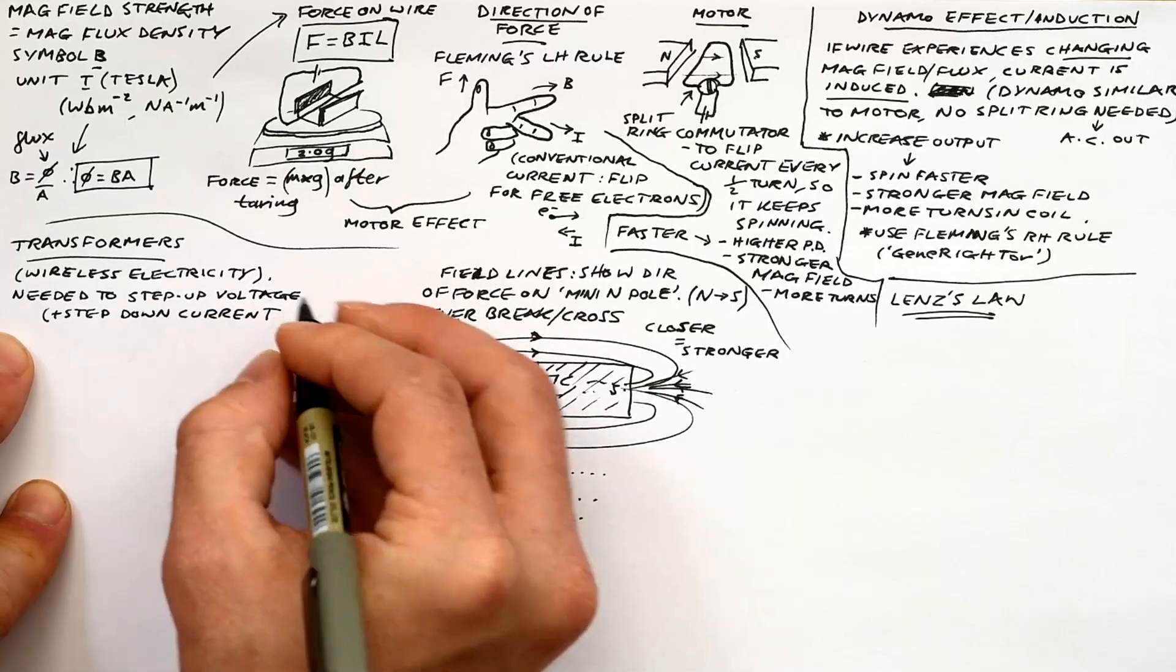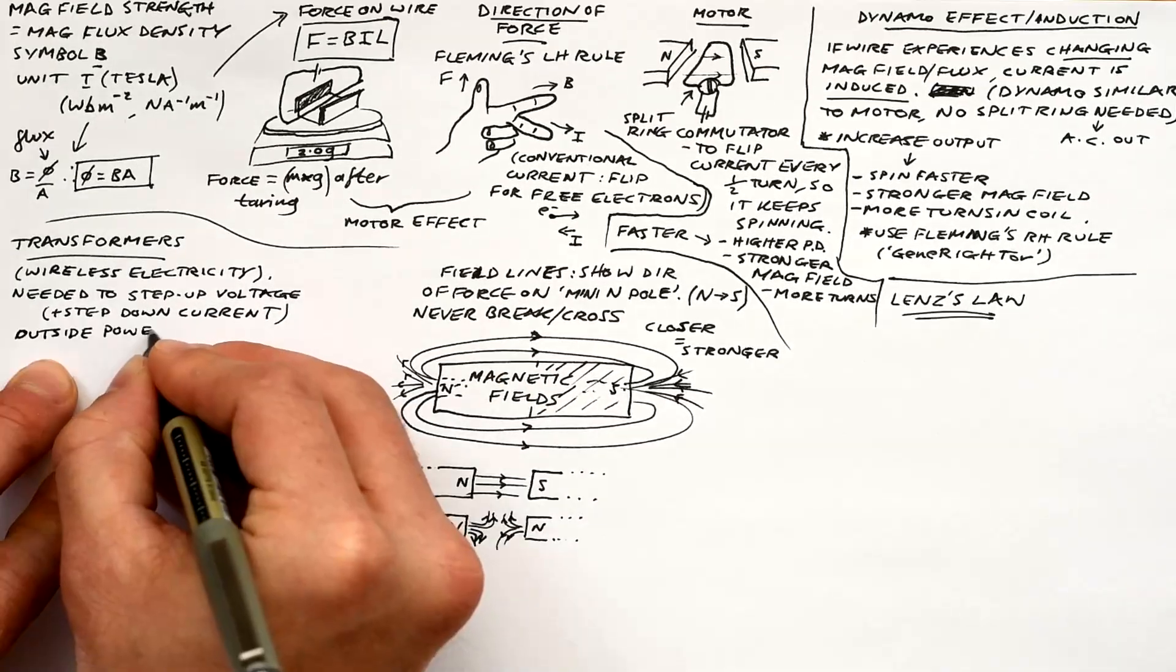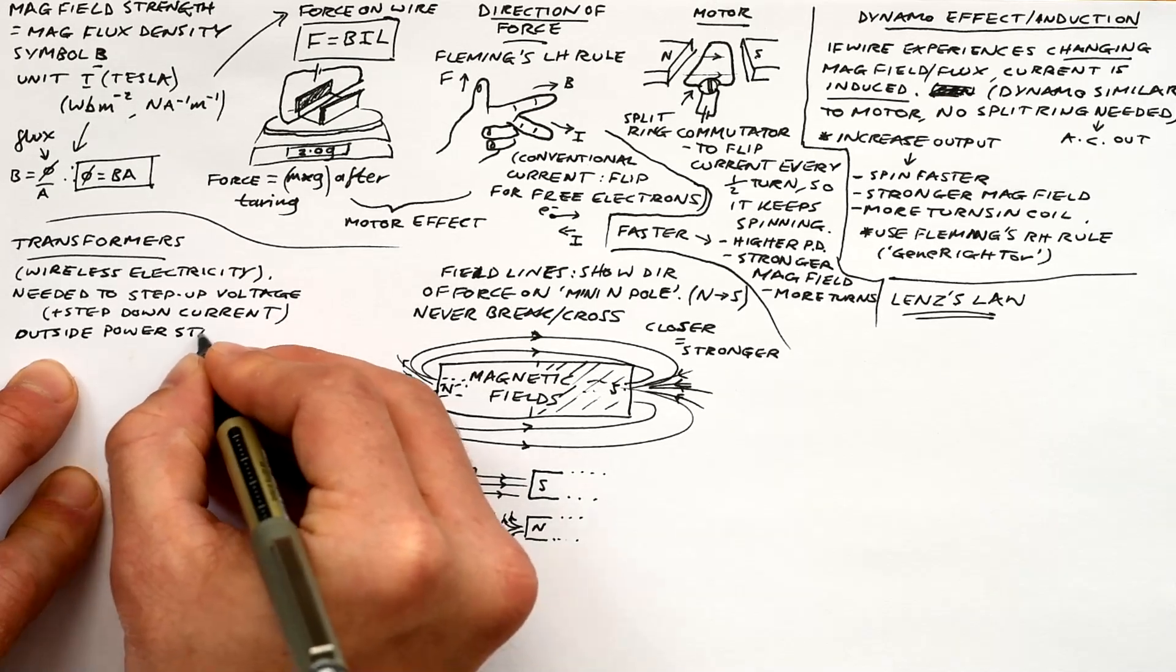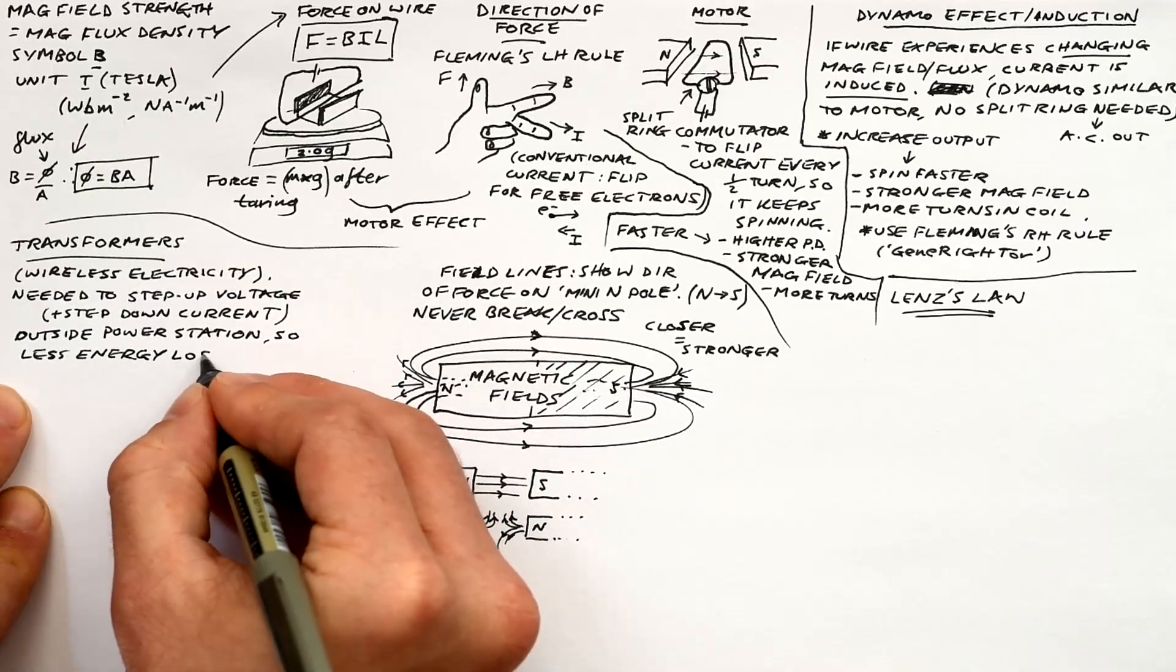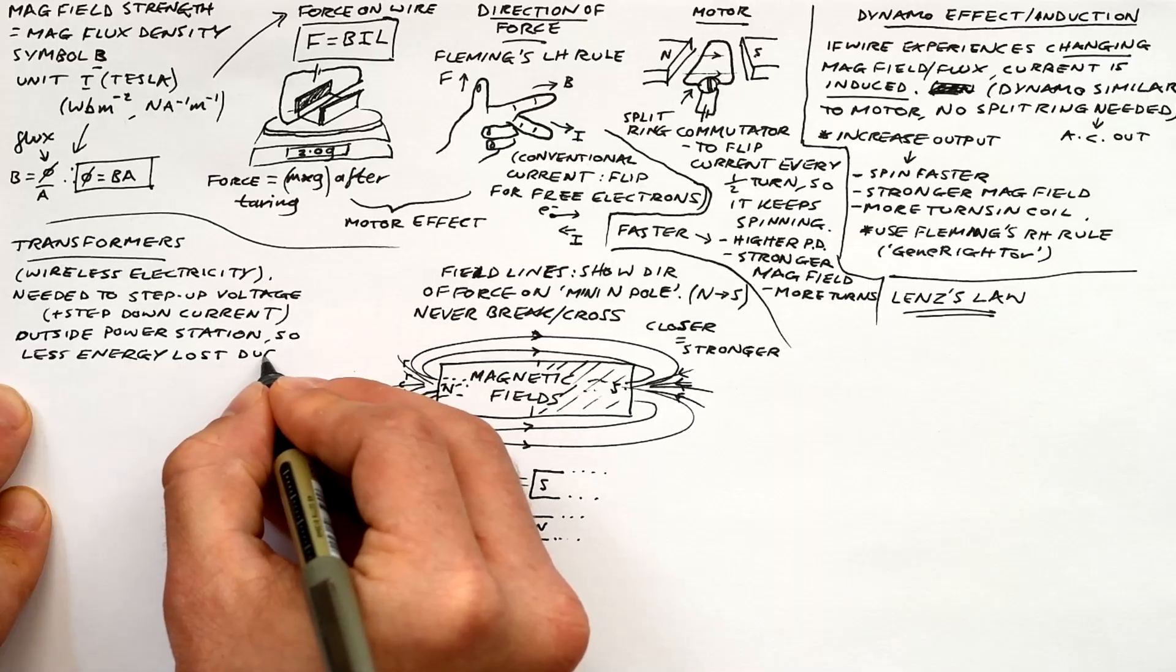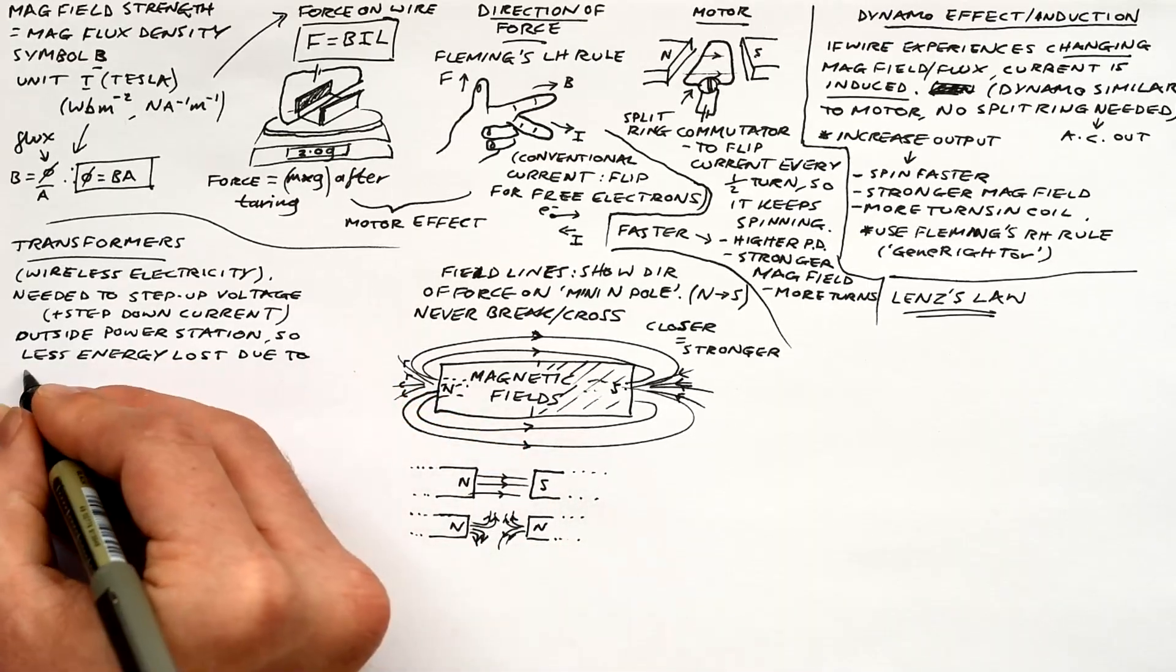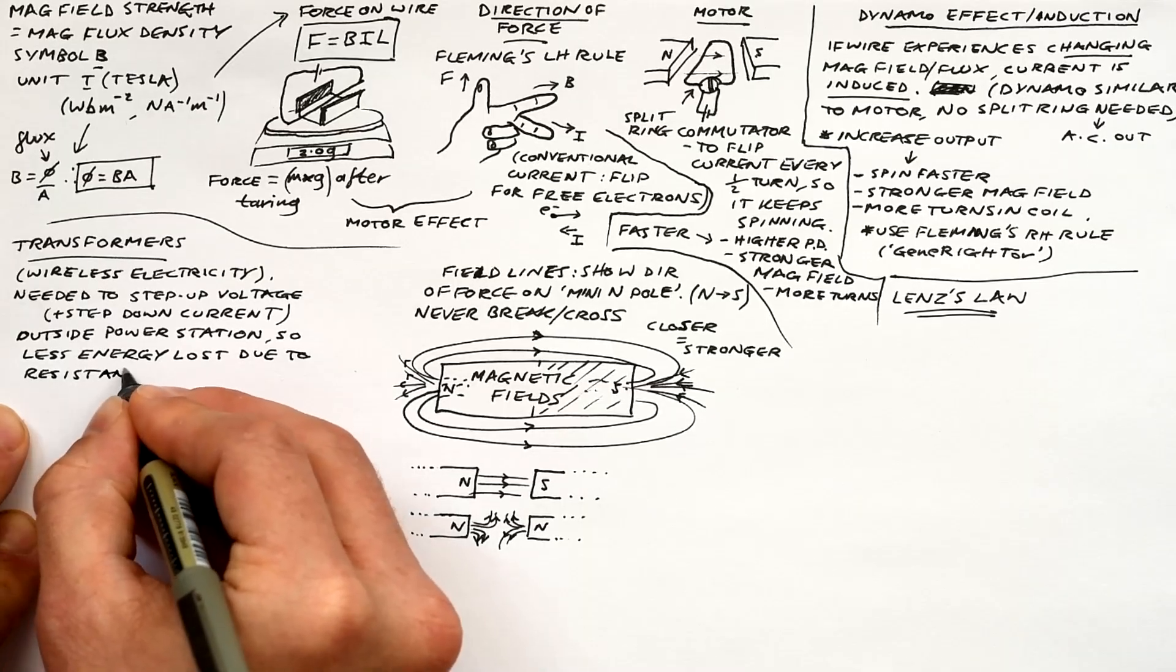We need them to step up voltage and step down current outside of a power station before the electricity goes to the national grid. And then we have transformers the other end outside our houses to step down the voltage this time, ready for us to use. And the reason we step up the voltage outside of the power station is to reduce the energy lost in the cables due to their resistance. If we have a lower current, then that means that we have less power or less energy lost due to heating.